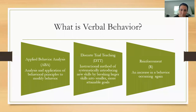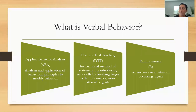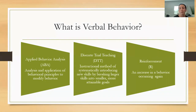Verbal behavior is one aspect of applied behavior analysis. ABA, in short, is the analysis and application of behavior principles to modify behavior — everything we do in the environment to either change or increase behavior. Some of the principles used in ABA are also used in verbal behavior, including discrete trial training, or DTT. DTT is an instructional method of systematically introducing new skills by breaking larger skills into smaller, more attainable goals. When we work with children with autism, we don't try to teach them ten words at a time — we break that skill into smaller, attainable, achievable goals, starting with a sound and building from there.